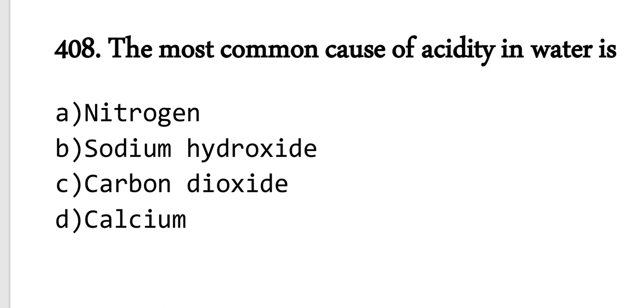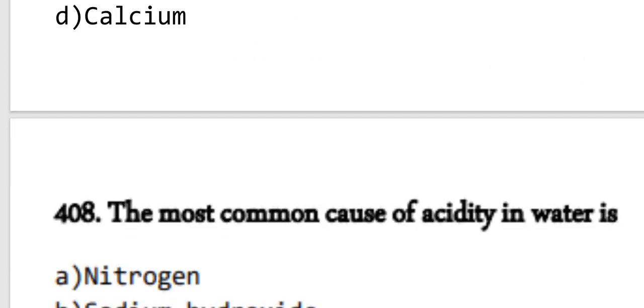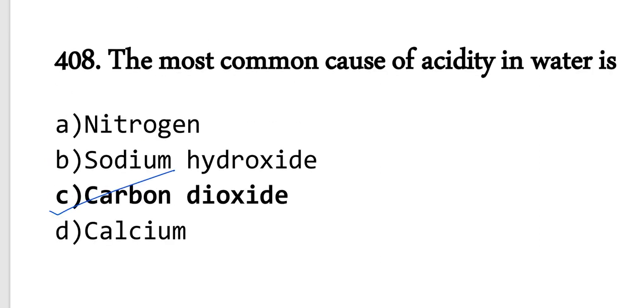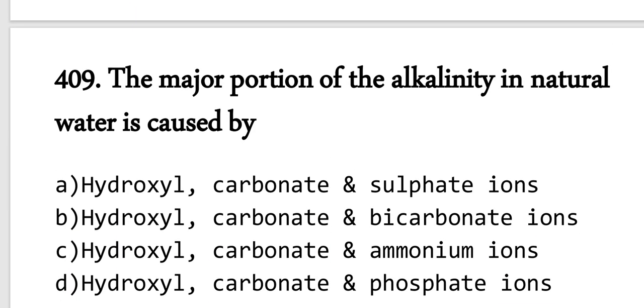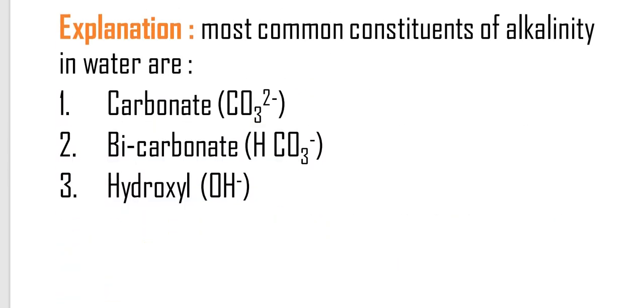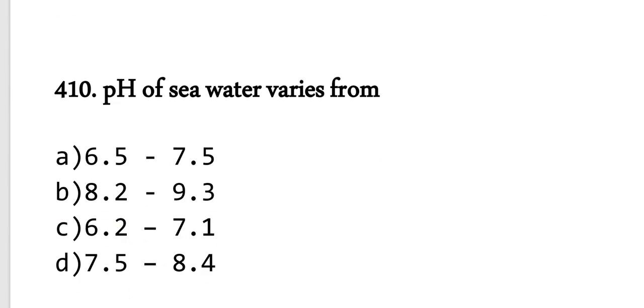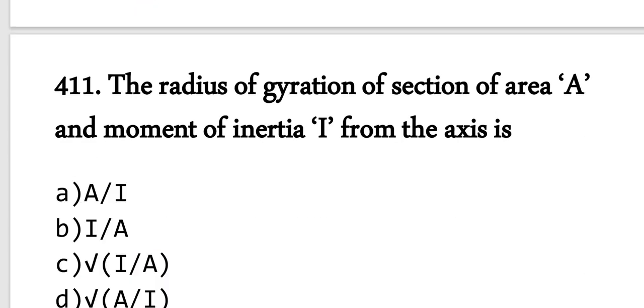Question number 408: The most common cause of acidity in water. The main cause is carbon dioxide. Question 409: The major portion of alkalinity is from carbonate ions, bicarbonate ions, or hydroxyl ions in natural water. Option B is correct. Question 410: The pH of water. Try to remember: 7.5 to 8.5 or 8.4. pH is the negative logarithm of hydrogen ion concentration. For seawater, it's 7.5 to 8.4, and for drinking water, it's 6.5 to 8.5.